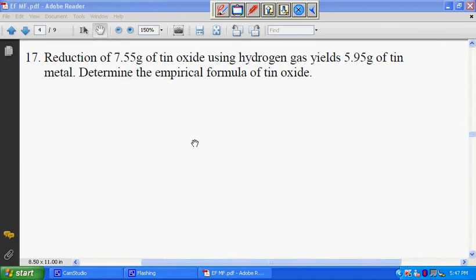Now let's look at question 17. Reduction of 7.55 grams of tin oxide using hydrogen gas gives 5.95 grams of tin metal. Determine the empirical formula of tin oxide.